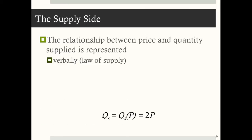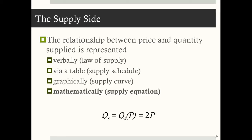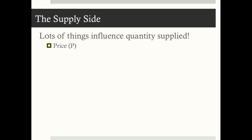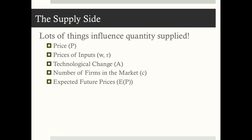On the supply side, supply is the relationship between price and quantity supplied, represented verbally by the law of supply, via a supply schedule, graphically with the supply curve, or mathematically with the supply equation. Many things influence quantity supplied beyond price: prices of inputs or factors of production, technological change, number of firms in the market, and expected future prices. A more complete supply function shows quantity supplied depending on price, wages, rental rates, technology (A), number of firms (C), and expected future prices (E).